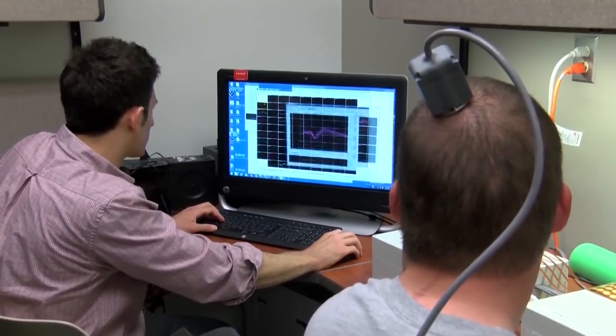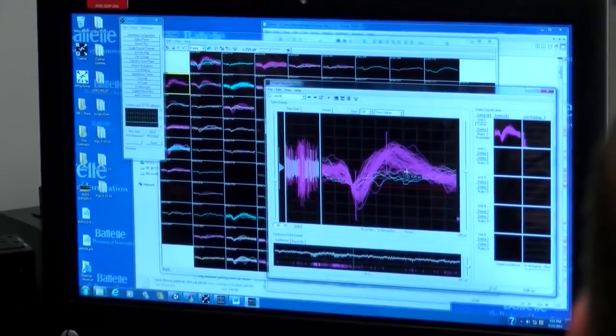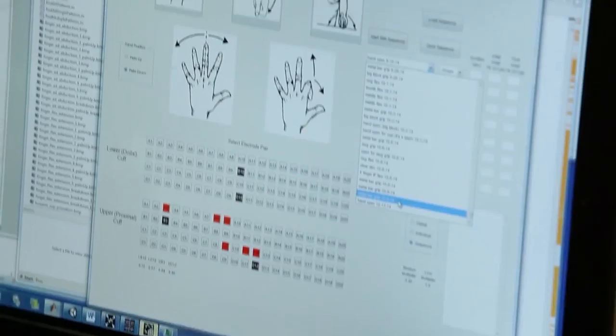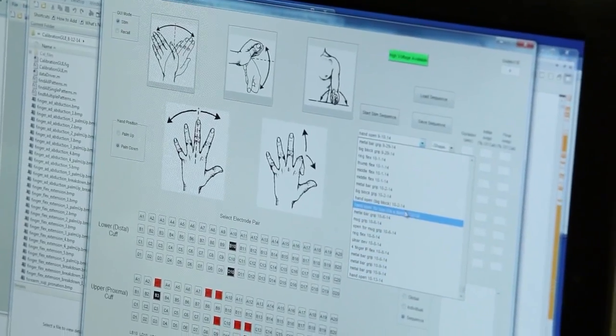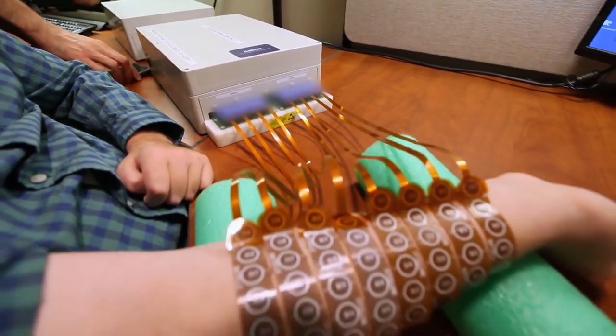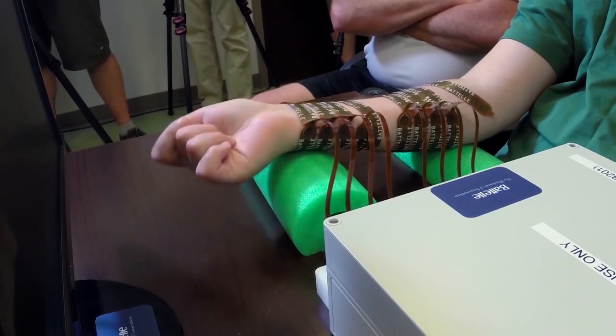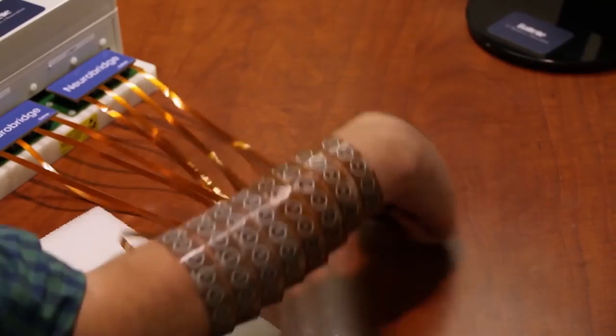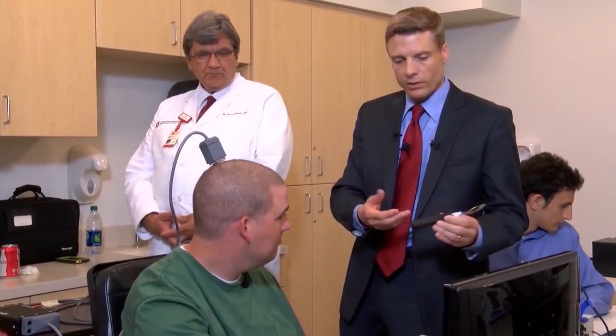The computer chip is actually able to read and decode Ian's brain activity, something which has never been done before. This info is then fed into a computer, which sends impulses to the muscles in Ian's hand, allowing him to move his fingers with only his thoughts. The mechanism works pretty much the same way any non-disabled person would move their own fingers.